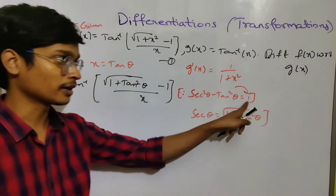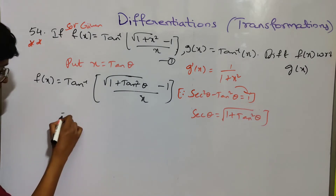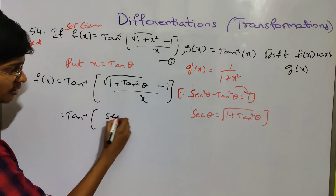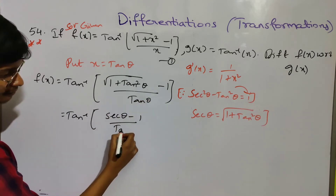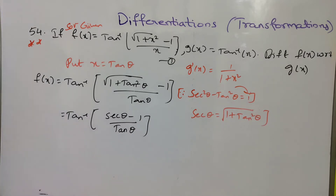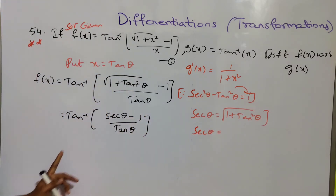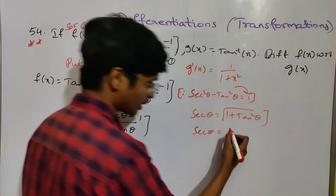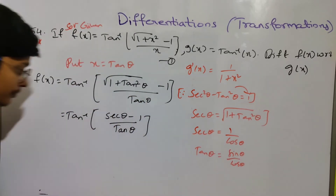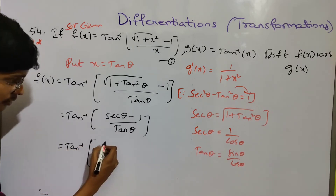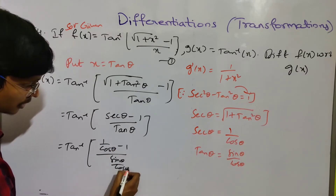If we get 1 plus tan squared theta, we get 1 plus tan squared theta under root. So the answer will be tan inverse of secant theta minus 1, by x, and then substituting tan theta. Secant theta equals 1 plus tan squared theta. Secant theta equals 1 by cos theta, and tan theta is sin theta by cos theta.